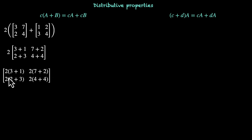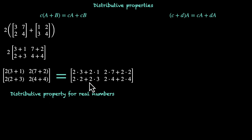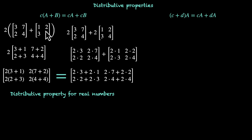Now at this step, each element is of the form a times (b plus c), where all of these are real numbers. Here we can use the distributive property: 2 times (3+1) equals 2 times 3 plus 2 times 1. We can distribute this for all elements. Now we can say that this is the sum of two different matrices — the first has elements 2 times 3, 2 times 7, 2 times 2, 2 times 4, and the second has 2 times 1, 2 times 2, 2 times 3, 2 times 4. We did this using the distributive property for real numbers. So we can take the 2 out and say this equals 2 times [3, 7, 2, 4] plus 2 times [1, 2, 3, 4]. We started with 2 times the sum of the matrices and ended up with the sum of each matrix multiplied by 2.